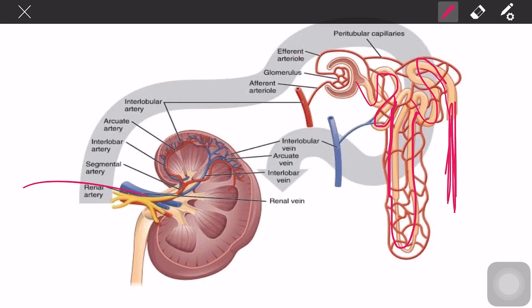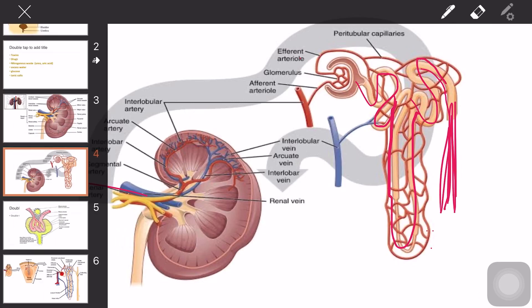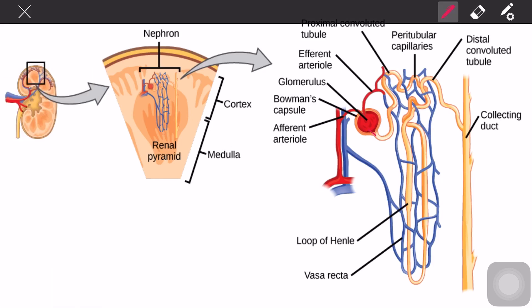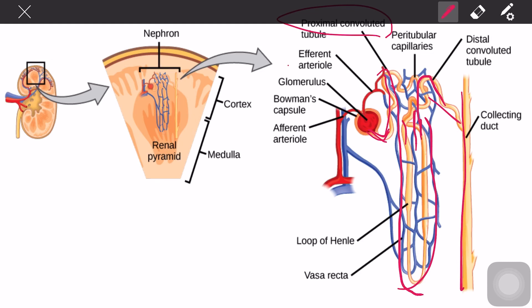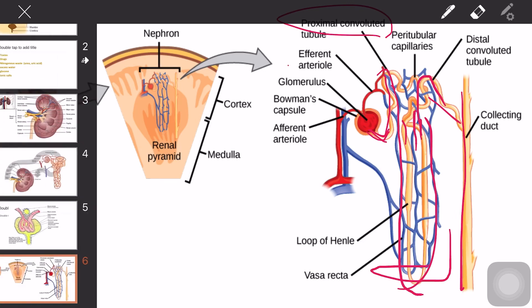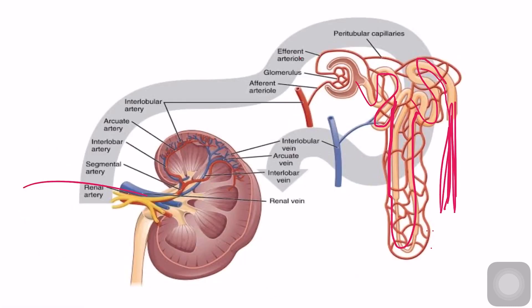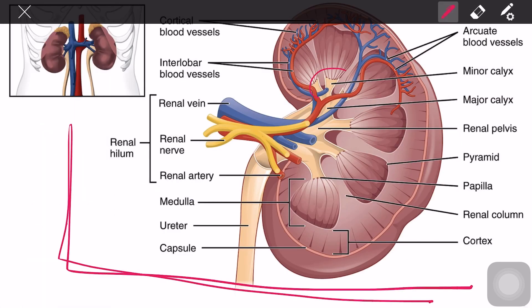After the glomerulus and Bowman's capsule, the filtrate — now urine — travels through the proximal convoluted tubule, the loop of Henle, the distal convoluted tubule, and then to the collecting ducts. After the collecting ducts, it travels to the minor calices, then the major calices, then the renal pelvis.